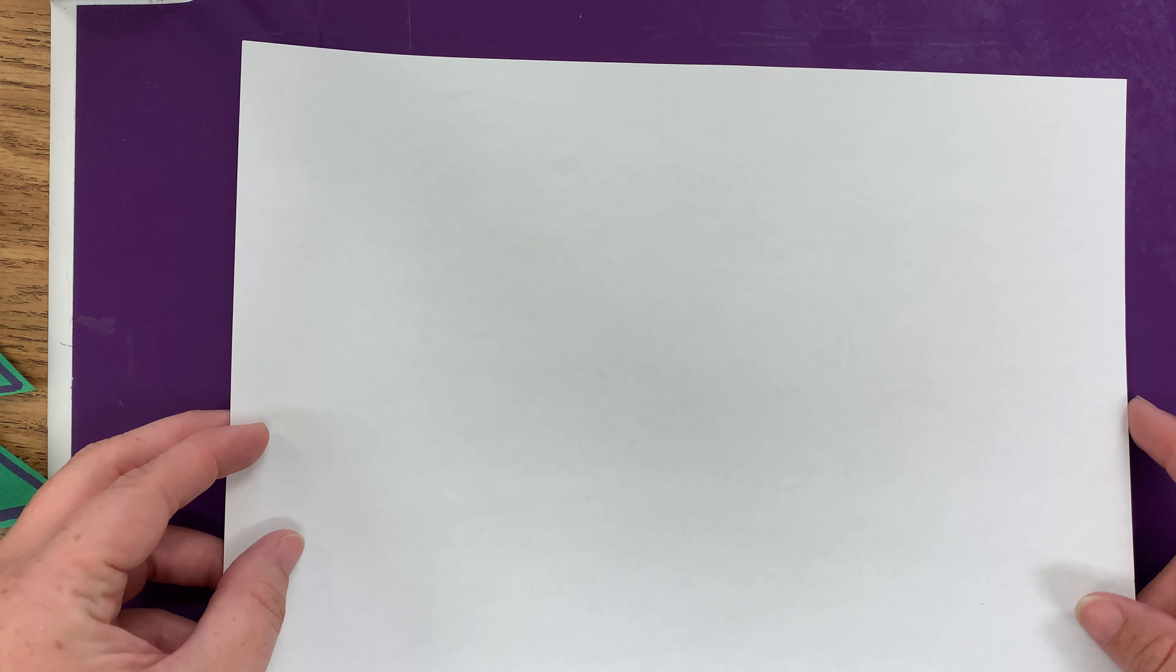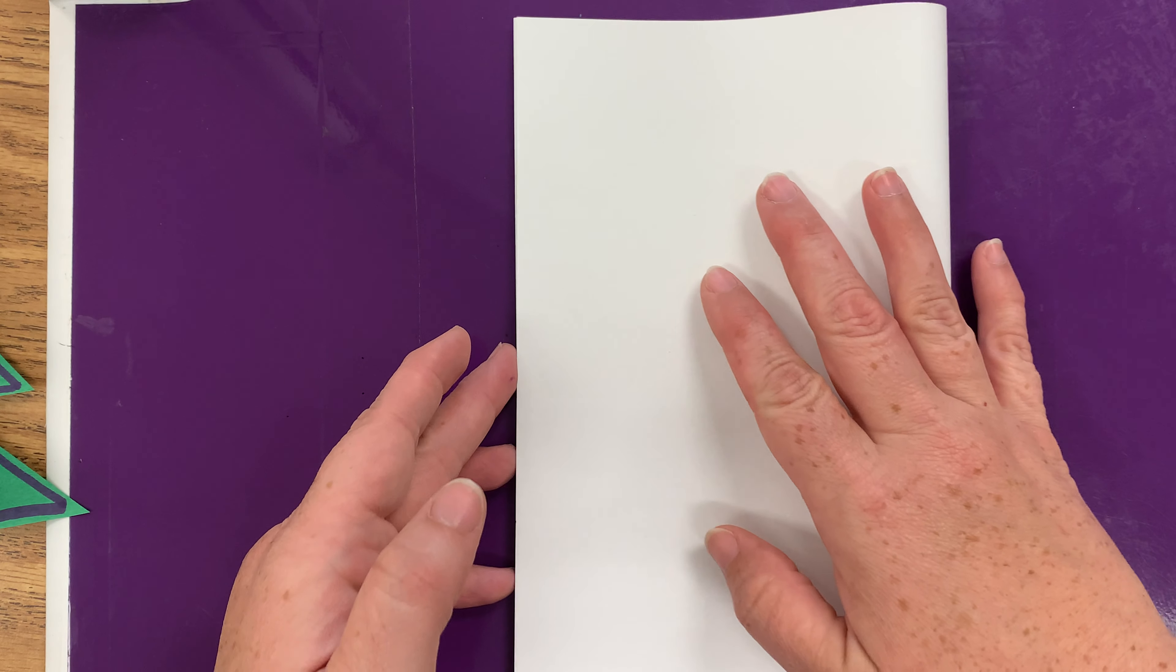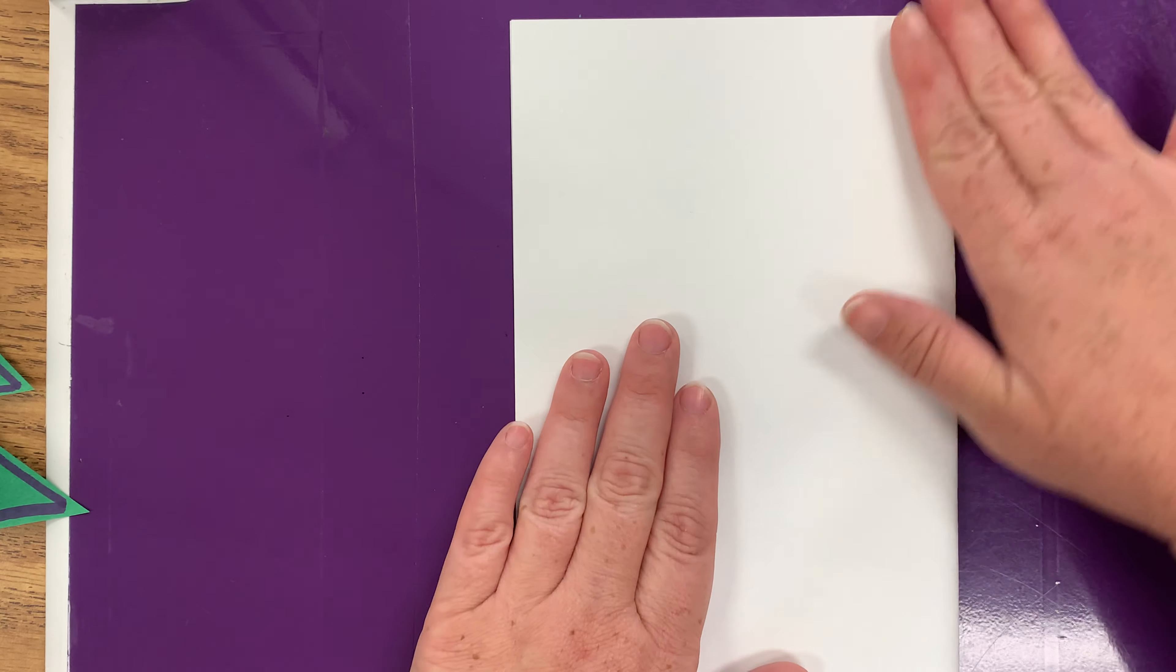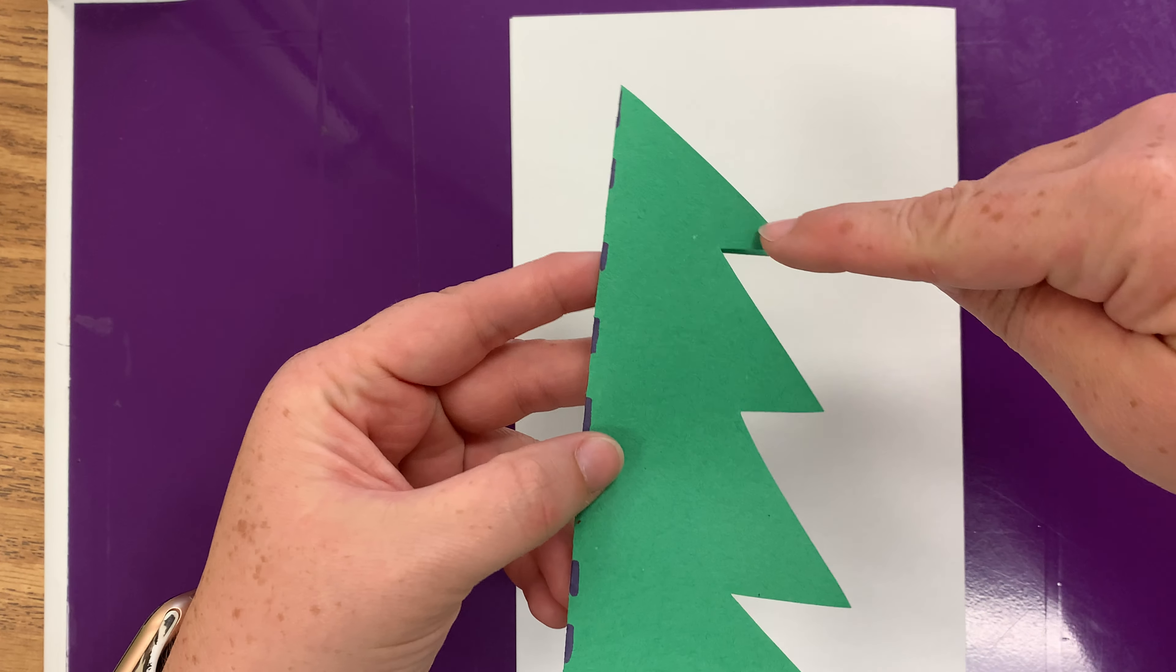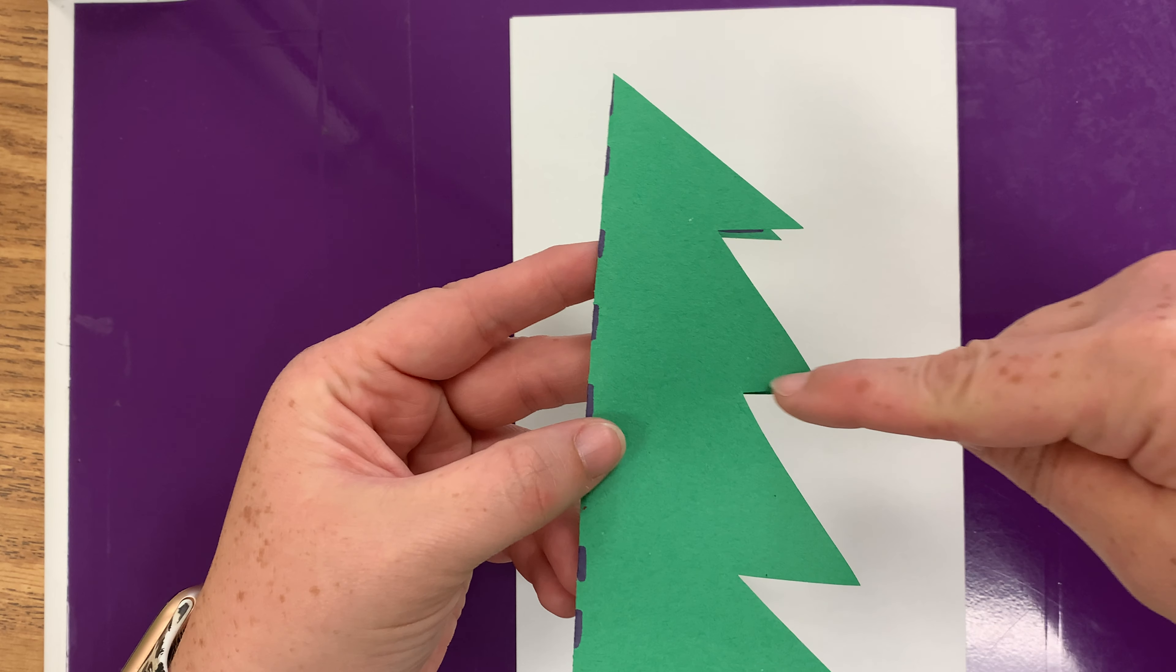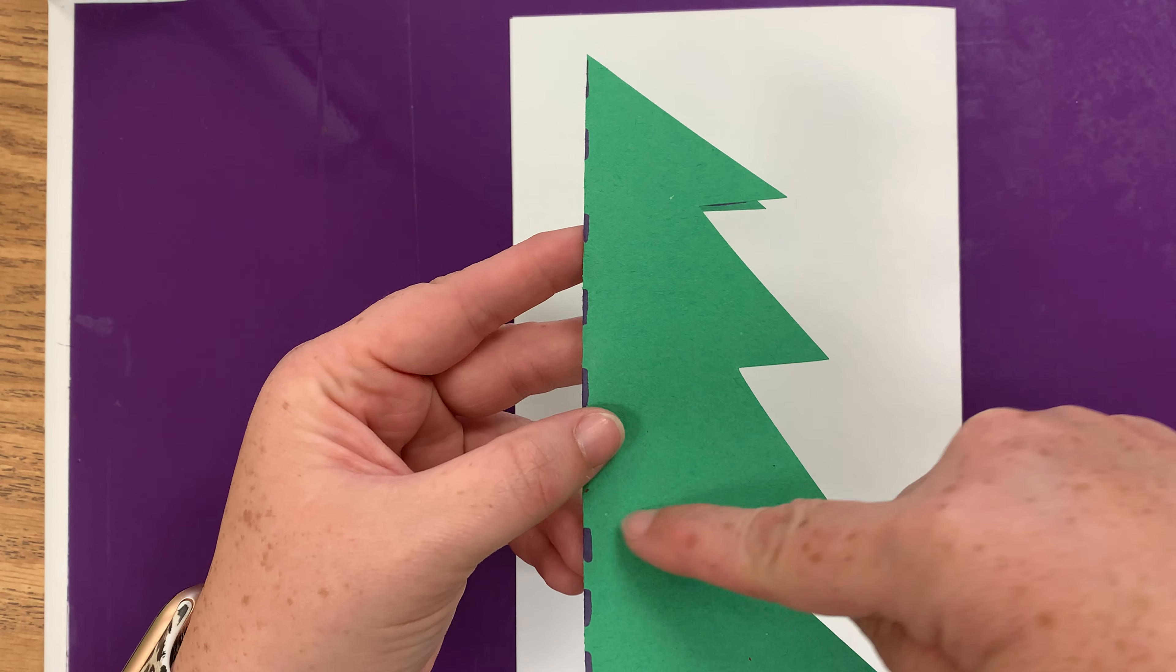If you want to do a pointy tree, I'll show you how to do that. Take your piece of paper, fold it in half to create that line of symmetry. And if you look at this, what shape do you see over and over? There's a triangle. That's kind of like a triangle. This is a triangle.